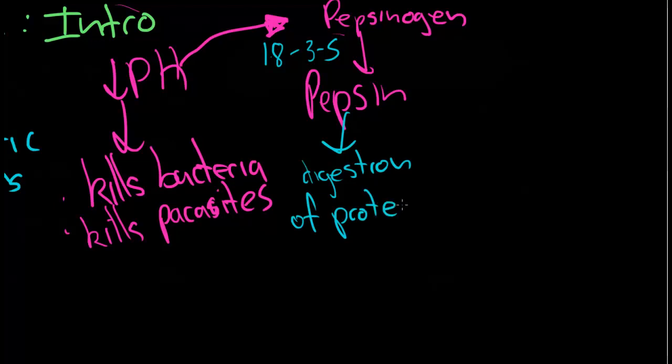Not much digestion happens in the stomach, but pepsin is an enzyme that degrades proteins and has a specific effect on collagen. It's just one of the proteins that none of the other enzymes really have much of an effect on. So that's pretty important, partially digest proteins.